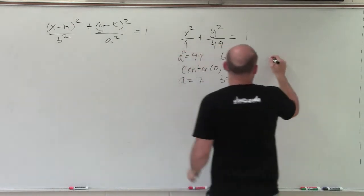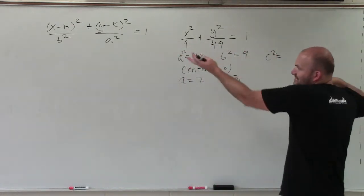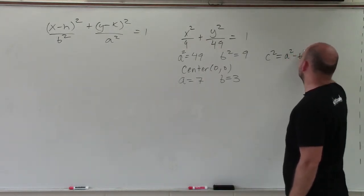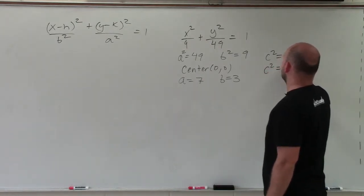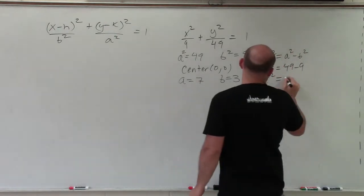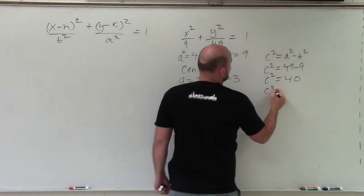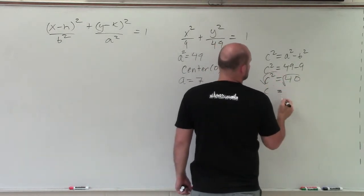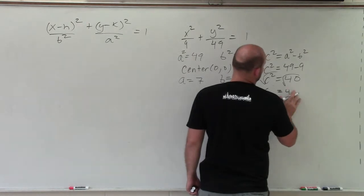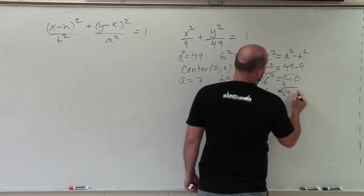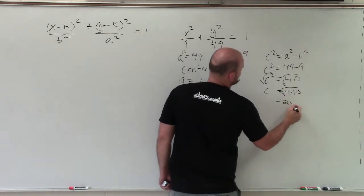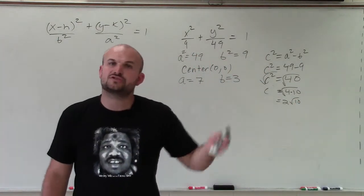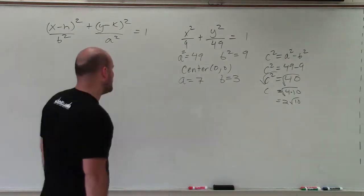The last one we need to figure out is c squared. Well, c squared is not up here, it's not in the equation. But c squared has a relationship of a squared minus b squared. So c squared equals 49 minus 9. c squared equals 40. c, now I'll take the square root of both sides. c equals 4 square root of 4 times 10, which is equal to 2 square root of 10. Now, c is important because c tells us the distance from the center to the foci. So now let's go and graph.